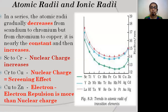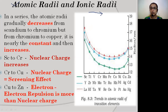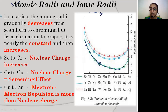In the 3D transition element series, atomic radii decrease as we go from left to right. However, this decrease is not very regular. From scandium to chromium, there is a gradual decrease. But from chromium to copper, atomic radii neither increases nor decreases - it remains essentially constant. At the end of the series, from copper to zinc, it slightly increases.